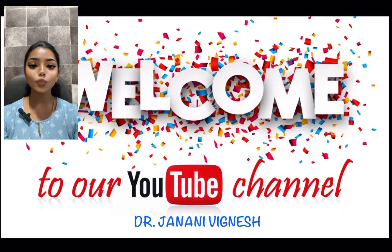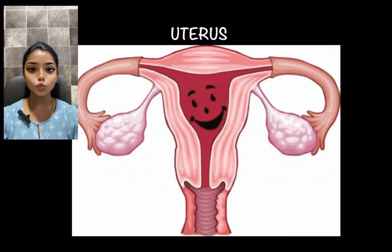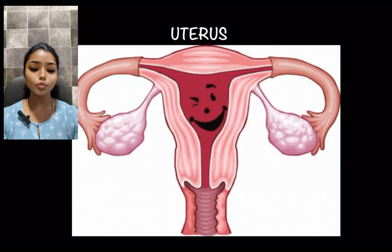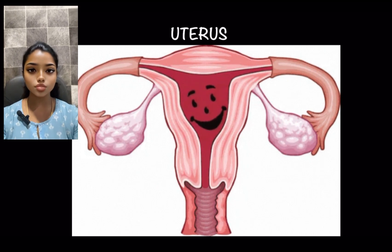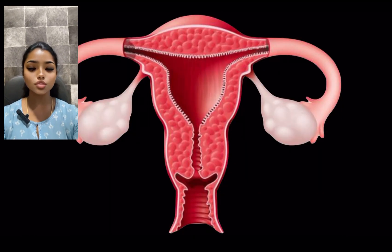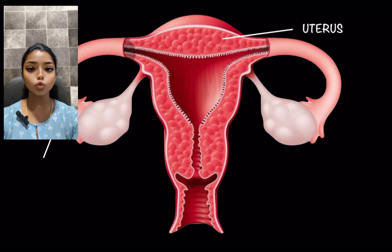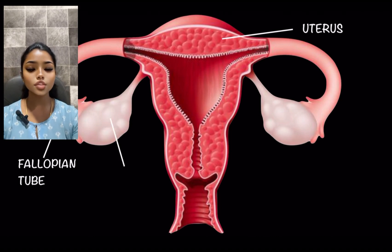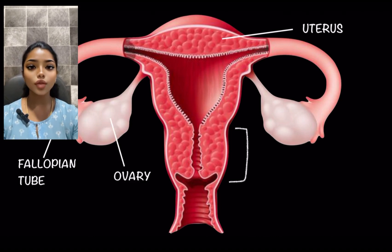Hello everyone, welcome to Dr. Janani Vignesh YouTube channel. Let's see the female reproductive organ, the uterus. Let's see the parts of the uterus. We have the uterus, the fallopian tube and ovaries on either side, the cervix and the vagina.